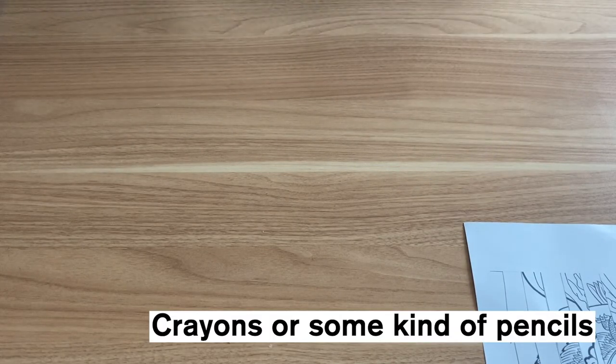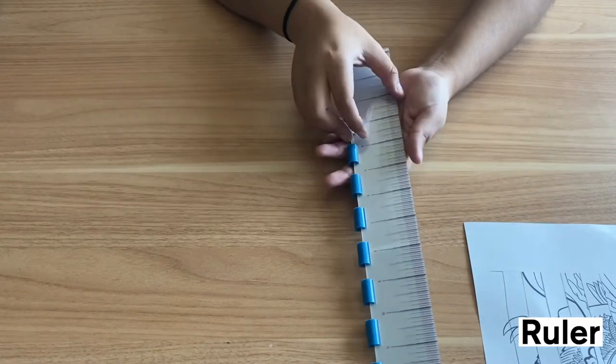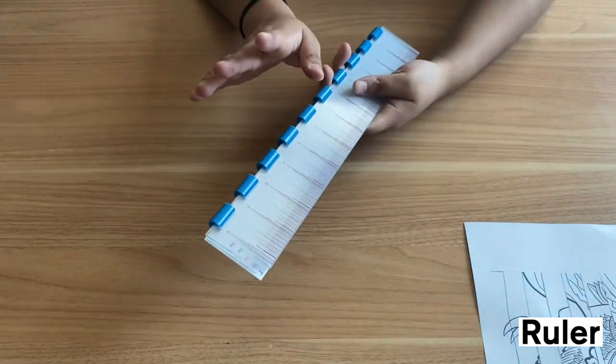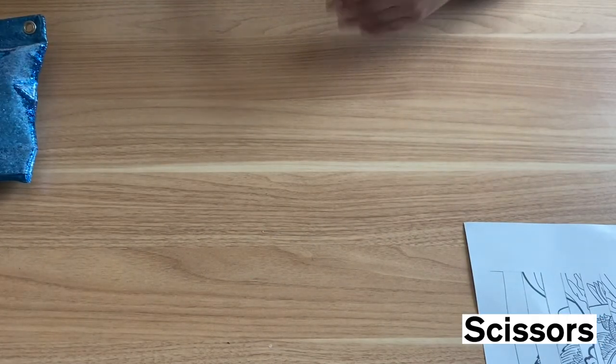You will also need some markers, a pen, some crayons, or some colored pencils. And you will need a ruler. I have a ruler book, but a single ruler will work. And you will also need some scissors.